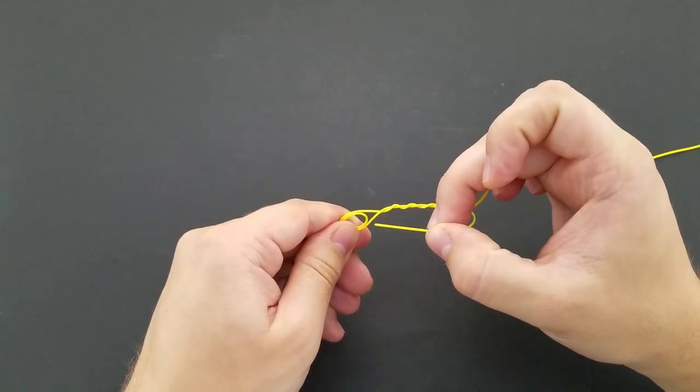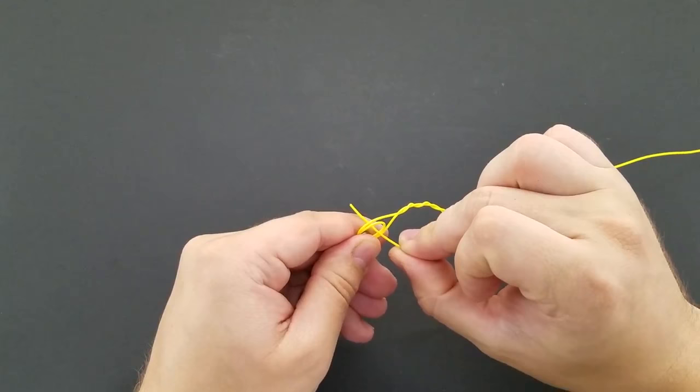Now with your tag end, you're going to want to run that back through the loop that you were holding and you created a loop with your wraps. This is going to pass through both, just like so.